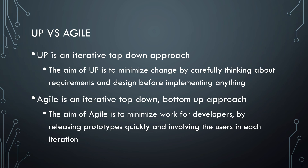Though there is some overlap between UP and Agile processes, they are quite different. UP is an iterative, top-down approach — the idea is to carefully think about requirements and design beforehand to minimize change later and avoid bad surprises. Agile, on the other hand, is an iterative, top-down, bottom-up approach. The aim is to keep things simple by minimizing development work, involving users in each iteration and making those iterations small, like a few weeks per iteration.